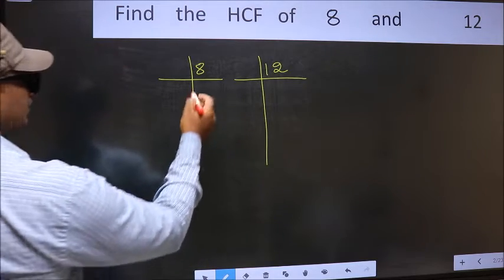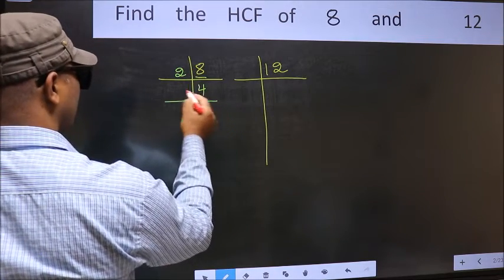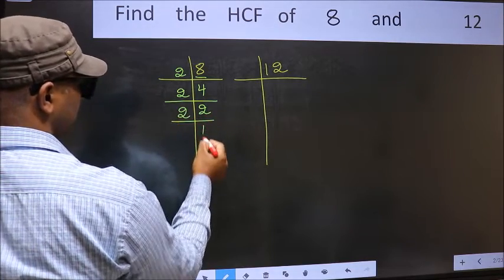Now here we have 8. 8 is 2 times 4 equals 8. 4 is 2 times 2 equals 4. Now 2 is a prime number, so 2 times 1 equals 2.